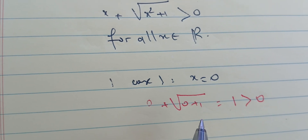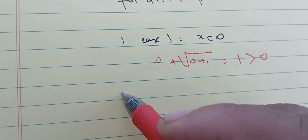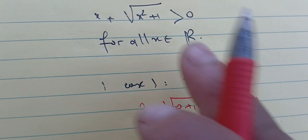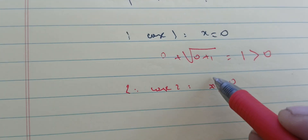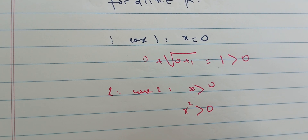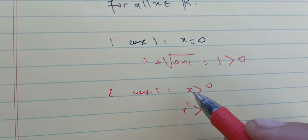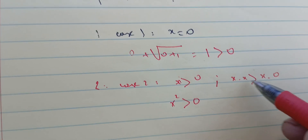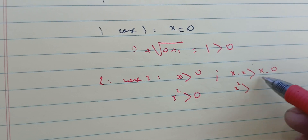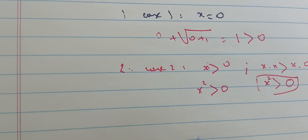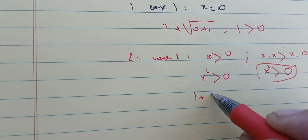Case two: x is strictly bigger than zero. Here we're going to use some ordering techniques to prove that this quantity is bigger than zero. Since x is bigger than zero, we multiply both sides by x to get x squared is bigger than zero. Adding one to both sides gives us one plus x squared is bigger than one.